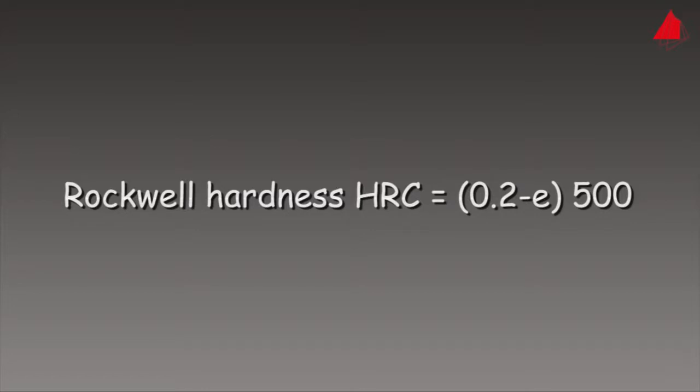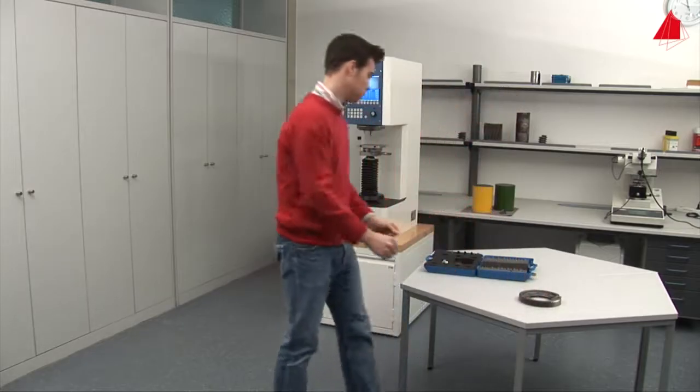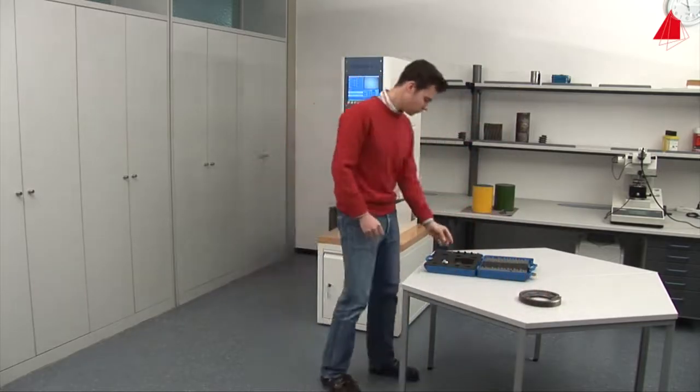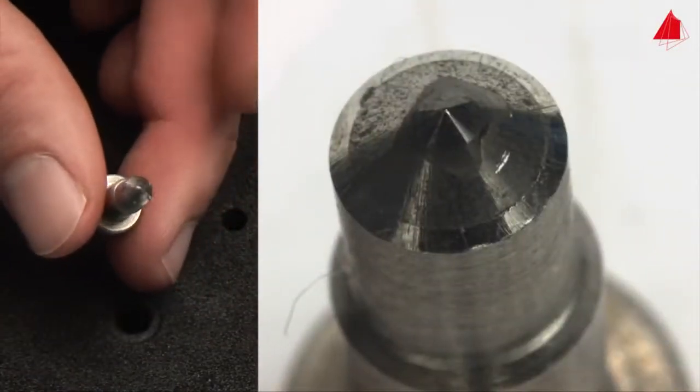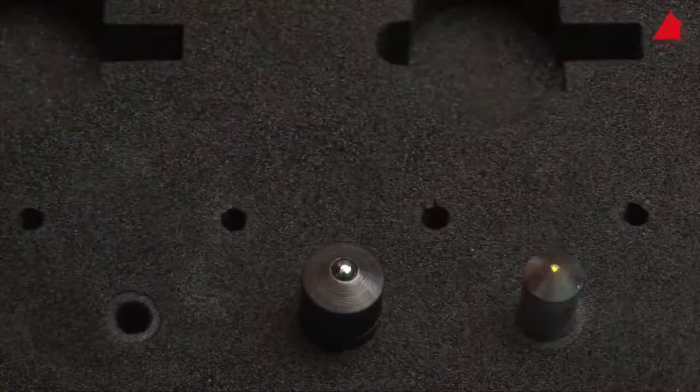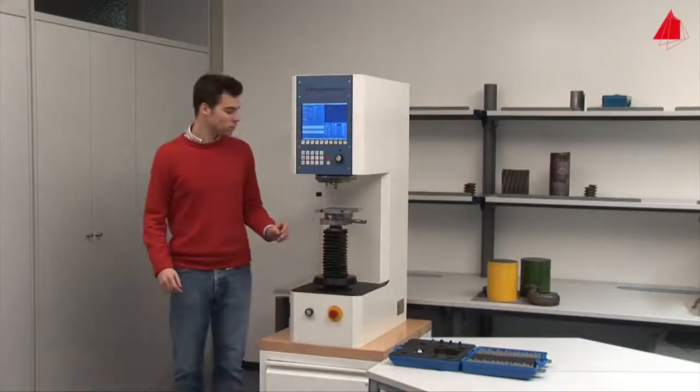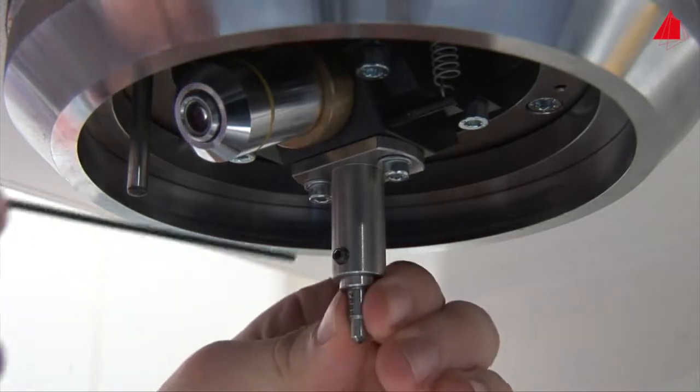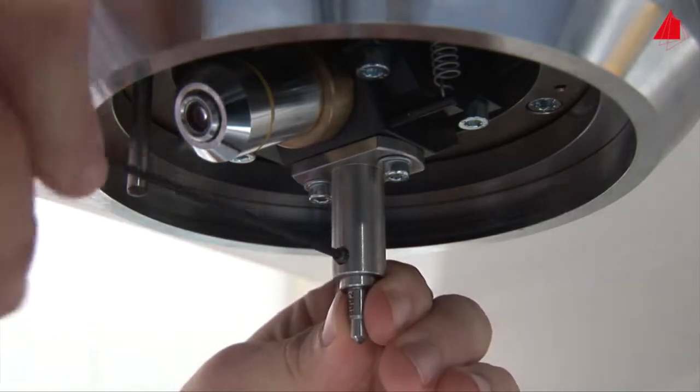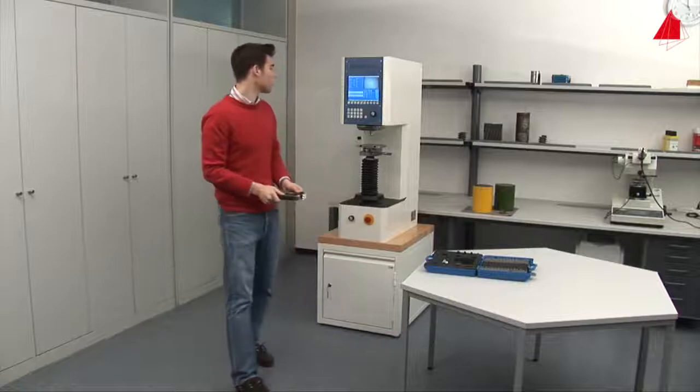Let's take a look at how the test is carried out in practice. The tester selects the conical diamond indenter and installs it in the testing machine, then picks up the gear wheel and puts it on the support table.